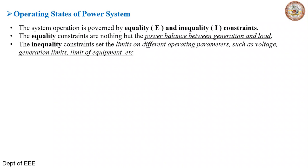Inequality constraints refer to all your electrical operating parameters such as voltage, generation limits, frequency, and the limit of each equipment. These are represented as inequality constraints.